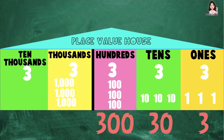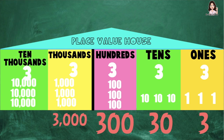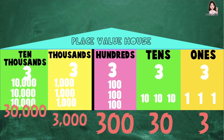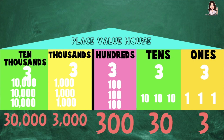So the value of digit 3 at the thousands place is 3,000. How about the value of digit 3 at the ten thousands place? We have 3 ten thousands. Let's count: 10,000; 20,000; 30,000. So the value of digit 3 at the ten thousands place is 30,000. So these are the values of digits in 33,333.